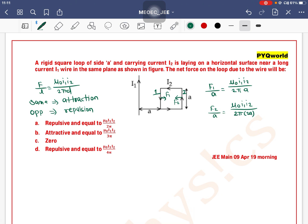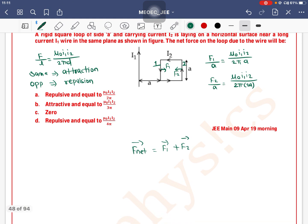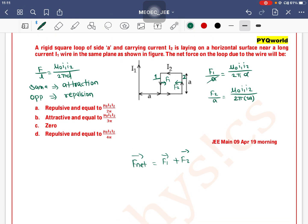Now to calculate net force: net force equals F1 vector plus F2 vector. Look here - the a terms cancel. F1 vector value is mu0 I1 I2 divided by 2 pi a in the i cap direction, and F2 is mu0 I1 I2 divided by 4 pi a in the minus i cap direction.